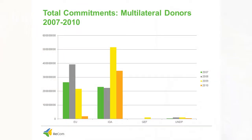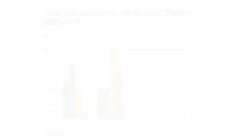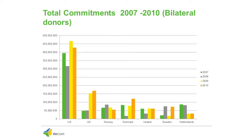Looking at the total inflow of aid from multilateral donors, the World Bank has the highest contribution, followed by the EU. For bilateral donors, the US is the leading contributor, followed by the UK, Norway, and Denmark.